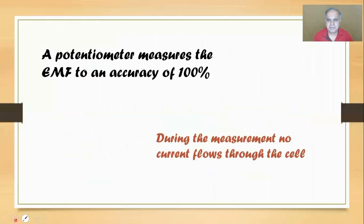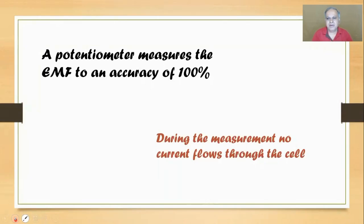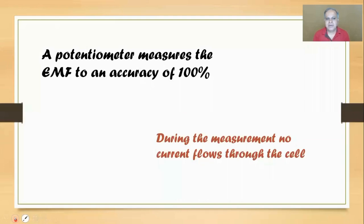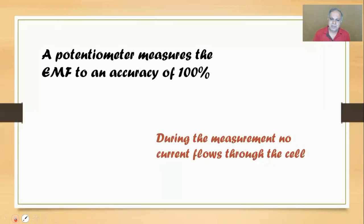There is actually a thing called a potentiometer. In place of that voltmeter, I could have put a potentiometer, but that's a new word - we have not learned that yet. So let us admit that the voltmeter cannot measure the EMF very accurately - it may achieve 99.9% accuracy depending on how high you made the resistance. But a potentiometer measures the EMF to an accuracy of 100%, because during its measurement current through the cell is actually zero.